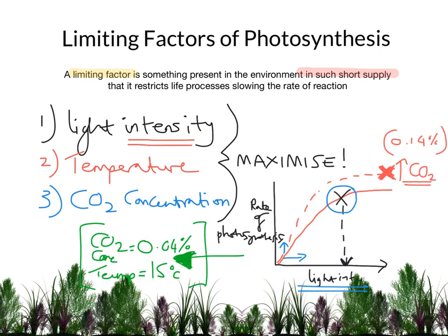That is everything you need to be aware of at GCSE and IGCSE level in terms of limiting factors of photosynthesis. These are factors present in the environment that, when they are in short supply or not at their maximum level, will restrict the particular process. The three to be aware of for photosynthesis are light intensity, temperature, and carbon dioxide concentration.